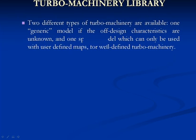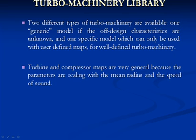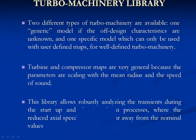The Turbo Machinery Library. Two different types of turbo machinery are available: one generic model, for when the off-design characteristics are unknown, and one specific model that can only be used with user-defined maps for well-defined turbo machinery. Turbine and compressor maps are very general, because the parameters are scaled by the mean radius and the speed of sound. This library allows robustly analyzing the transients during start-up and shut-down processes, where the reduced axial speed and flow are far off from the nominal values.